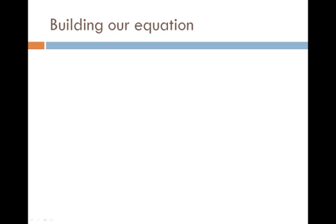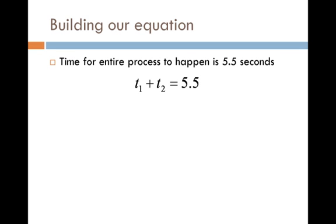Using these unknowns with some information from the problem, we can start to build a few equations along the way. One of the first things that we can build comes from the fact that the entire process for the screwdriver to fall and to go back up takes five and a half seconds. So that's really a combination of both of our times, our falling time going down and our sound time going back up. So that gives us this equation right here: t1 + t2 = 5.5.